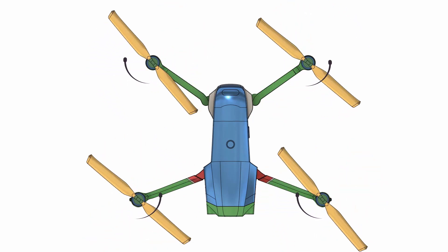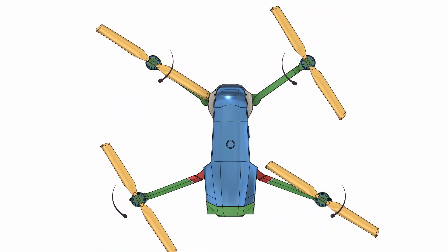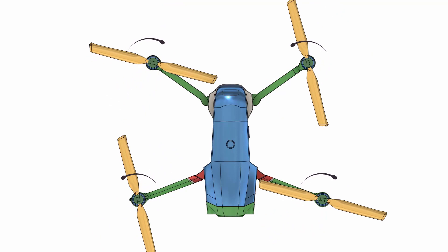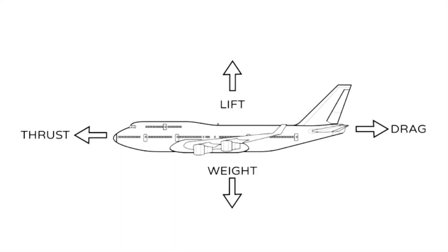Conclusion. Understanding the forces of flight is fundamental to aviation, whether we're talking about conventional airplanes or modern quadcopter drones. Lift, weight, thrust, and drag remain the key forces that shape the flight of airplanes, while quadcopters introduce additional considerations, including torque, and a unique method of generating lift and thrust through the rotation of their rotors.